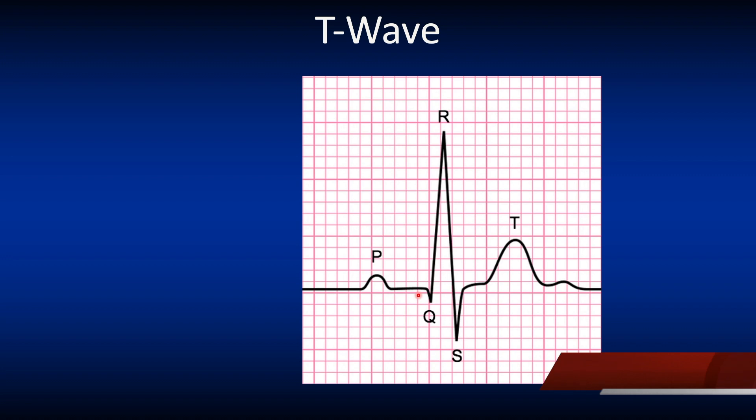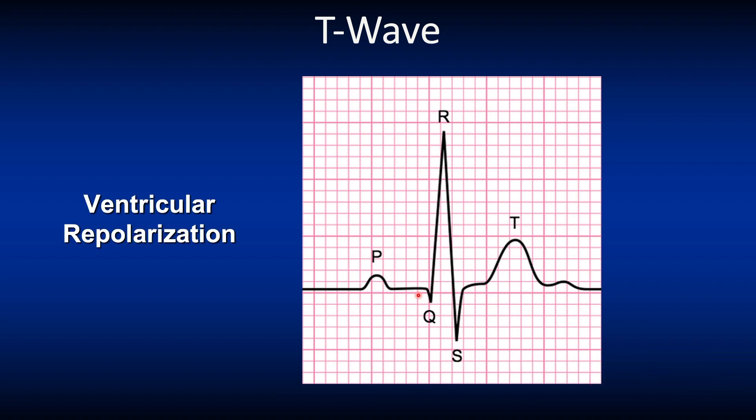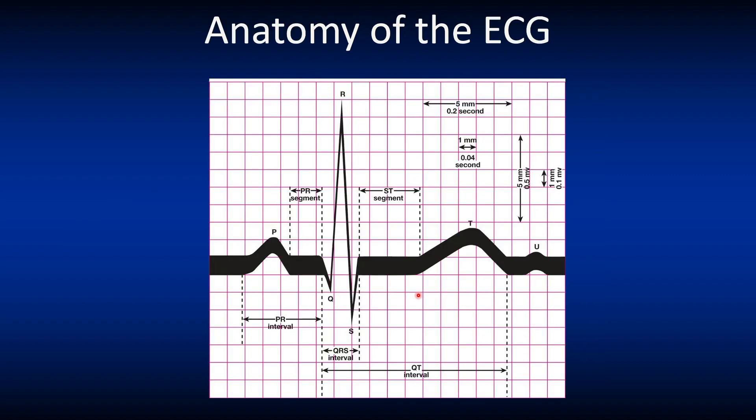Now let's look at the T wave. The T wave represents ventricular repolarization. We will not be using the T wave as part of this basic interpretation of the ECG.